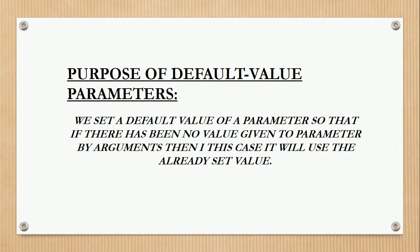Parameters are those variables which we use while defining the function inside the parentheses, and their values are given as arguments while calling the function. What default parameters do is — for example, if we forget to give the argument value while calling the function, or we don't want to provide the argument value every time, we set a default value inside the parentheses while defining the function. When we don't give the argument value, it will use the default value already set.